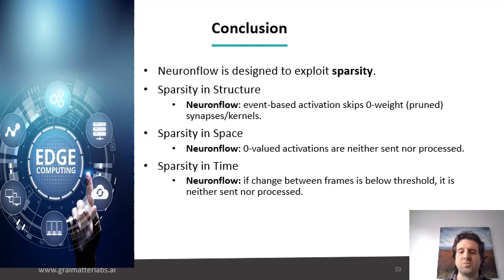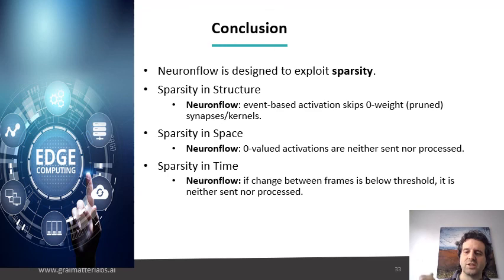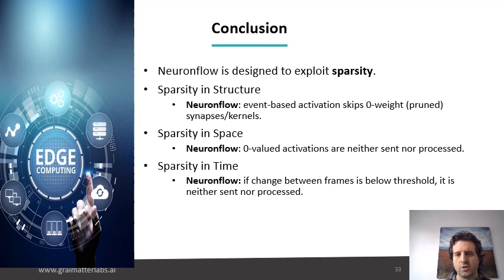There's sparsity in space because zero-valued activations will actually not send anything out — so there's no access to memory, no communication, no processing for a zero-valued activation. While in many other architectures you may skip the computation, it's very difficult to skip the actual memory read because you have first to go to the memory, read it, and see that it's a zero before you actually skip it. And sparsity in time, which practically no other commercial architecture that I know of supports — the idea of computing the differences between frames instead of computing always full frames.